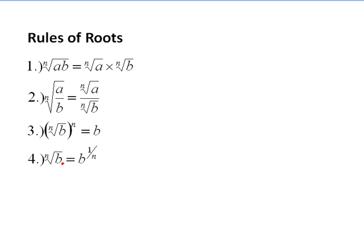The nth root of B is also equal to B to the 1 over N. So we can change a radical. This is the most important. We can change a radical to an exponent, a fractional exponent. But we can change back and forth from a radical to an exponent. Let's see some problems.